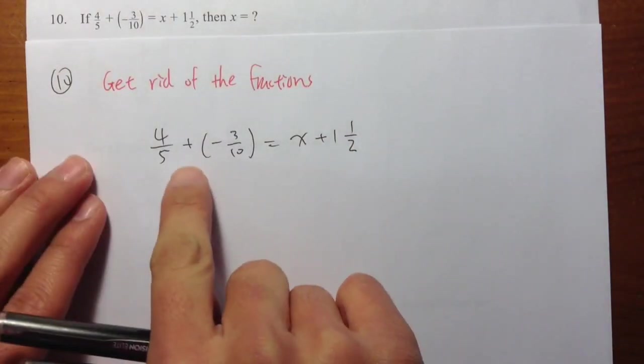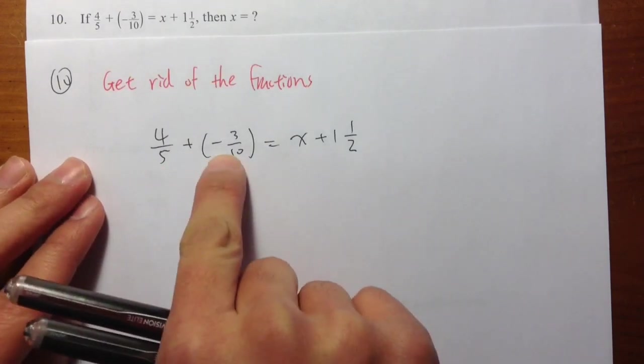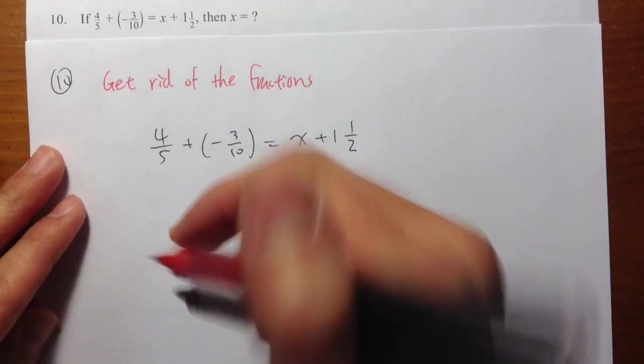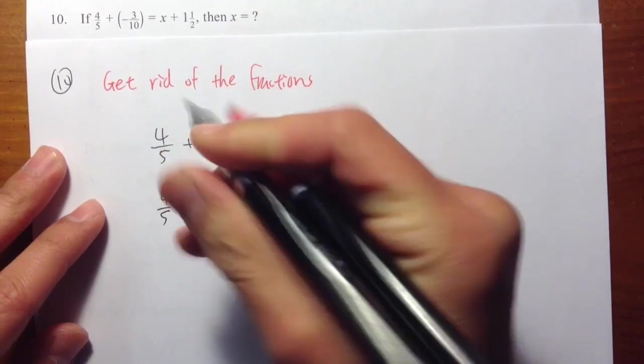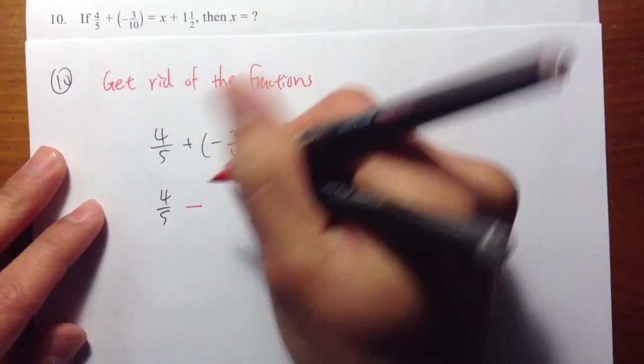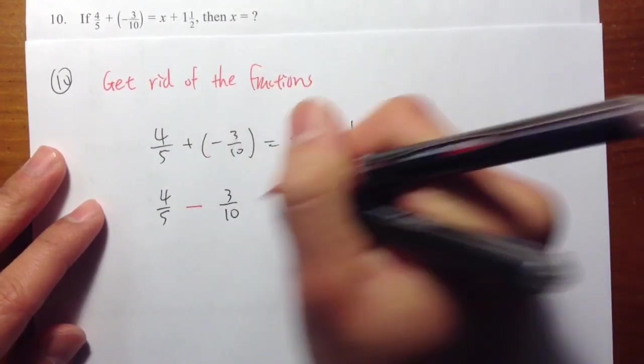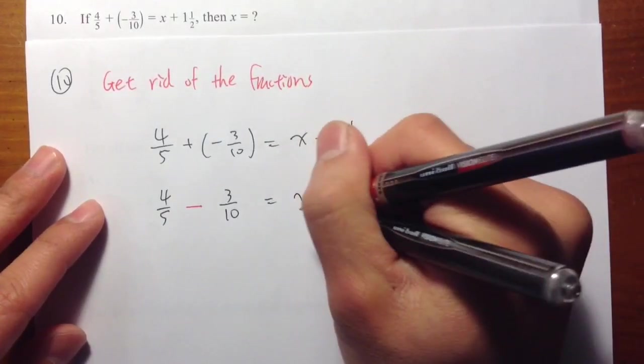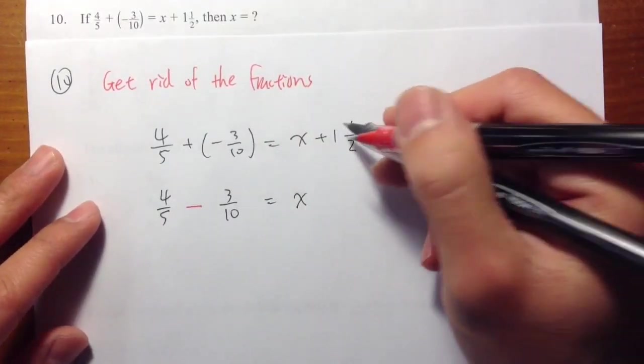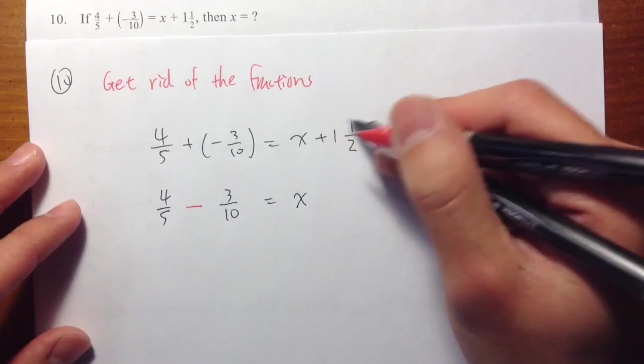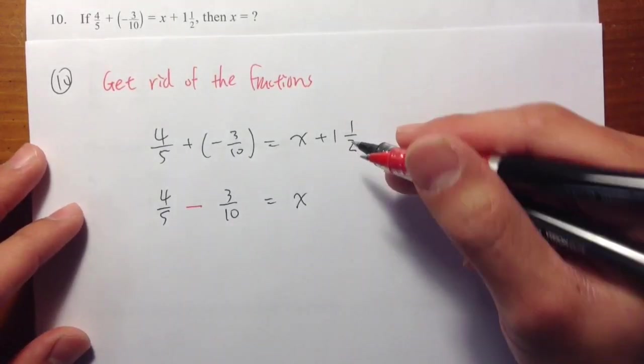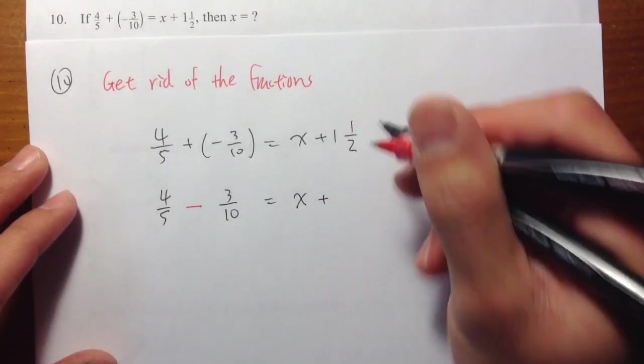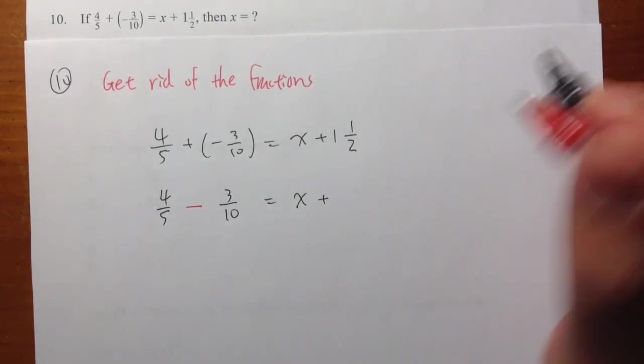So let me take care of some business. Positive times a negative, it's a result of negative. So I have 4 over 5, minus 3 over 10, equals to x. And also, I need to take care of this business. I need to change this to an improper fraction. So as I said earlier, I would like to work with improper fractions better.